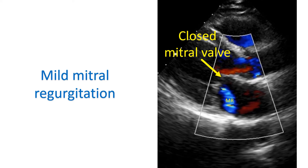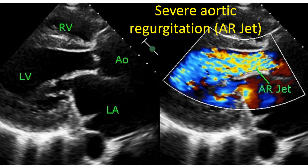In the case of a regurgitant valve, it is often difficult to make out a small regurgitation orifice between the valve leaflets when it is supposed to be fully closed. In that situation, Doppler echocardiography will show a high velocity mosaic jet across it, which is easily seen. The extent to which the color Doppler jet extends behind the regurgitant valve is an important indicator of the severity of the regurgitation. The area of the mosaic jet into the chamber preceding the valve is another important indicator of the severity of the regurgitation.